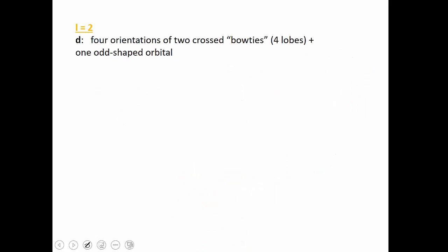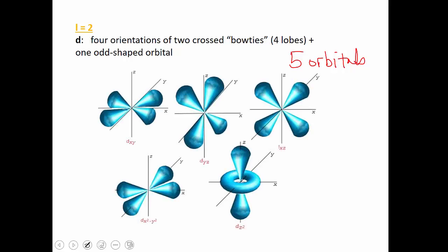Our next subshell is the D subshell. It has an L value equal to 2 and has five orbitals, which gives it a capacity of 10 electrons. These orbitals start to get more complex in shape. The D orbitals are only found in larger shells, and each of them kind of looks like two somewhat P-shaped orbitals. The next quantum number we'll look at will define which of those five orbitals we're talking about. L equals 2 means the electron is in one of these five D orbitals.